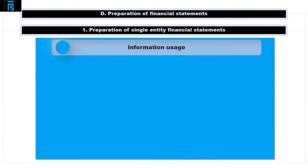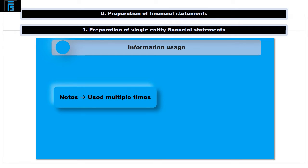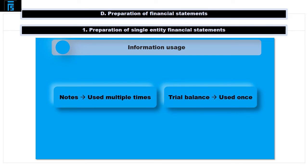As we have used information which comes from the note to the trial balance, I will tick the paragraph that talks about the need to charge depreciation. However, as a general rule when it comes to these notes, I will come back and use it for a second time when we come to prepare the statement of financial position. So, items contained in the trial balance itself are used once only, whereas information contained in the notes is typically used twice — in the statement of profit or loss or the statement of changes in equity, and for a second time in the statement of financial position.